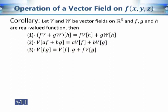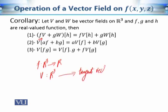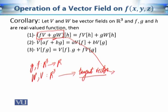Here f is a real-valued function from R³ to R, and V is a vector field — its domain is R³ and its output is a tangent vector. Similarly g is also a function from R³ to R, and W is also a vector field from R³ to tangent vectors. Using all this information, the expression fV + gW is going to be a vector field.